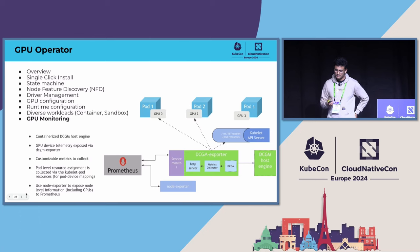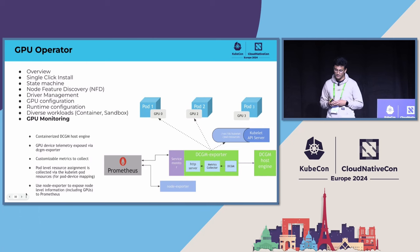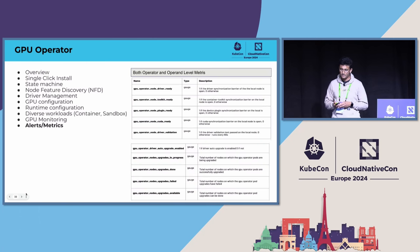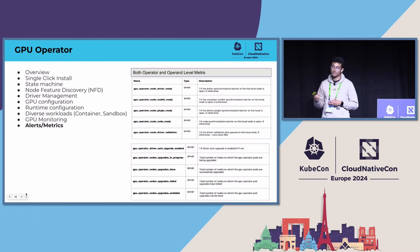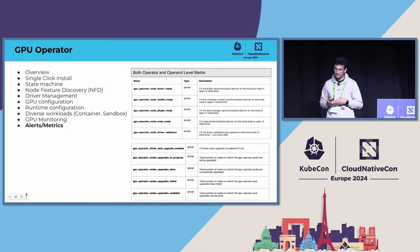For GPU monitoring, we deploy DCGM exporter — with the DCGM engine built-in or as a separate container — and automate the lifecycle of the DCGM component. We automatically create service monitors and you can dynamically change the metrics you want to collect using DCGM. We also have metrics built into the operator at both the operator level and operand level, so SRE teams can easily monitor if every component is functioning correctly and see the progress of upgrades.